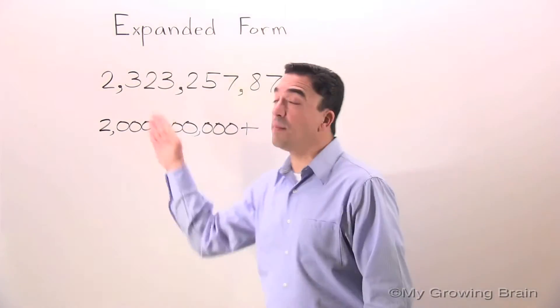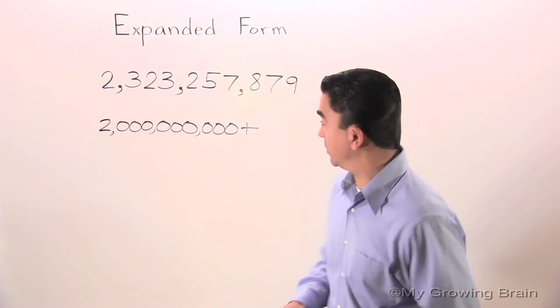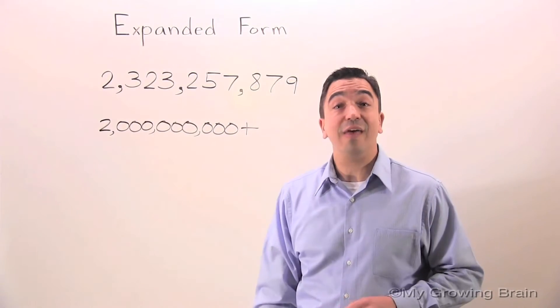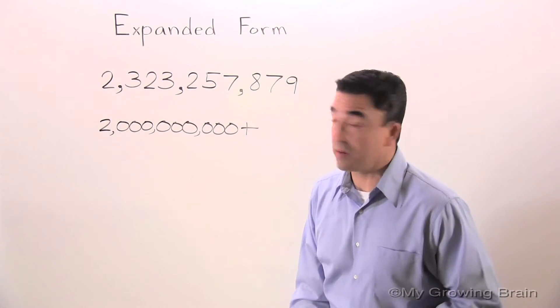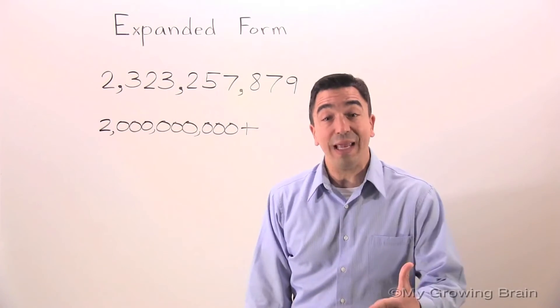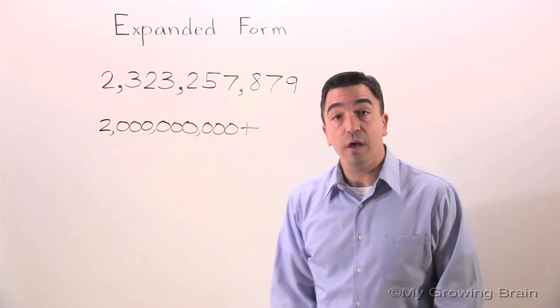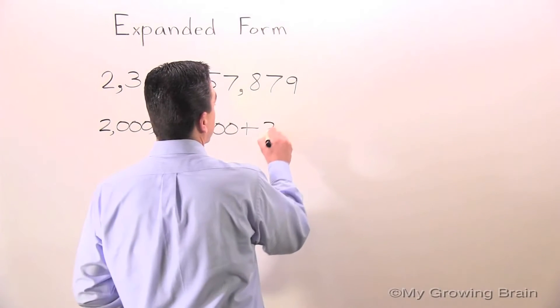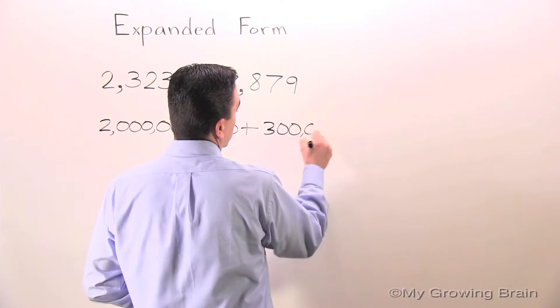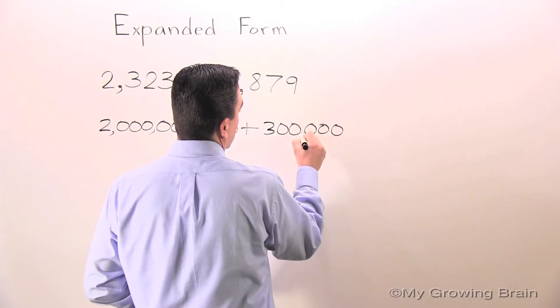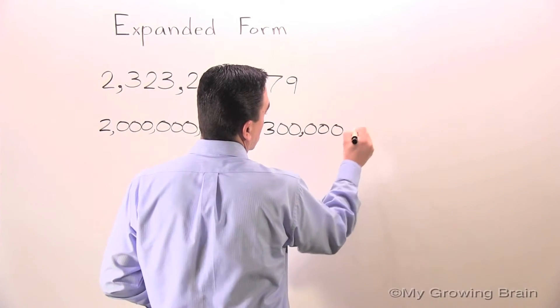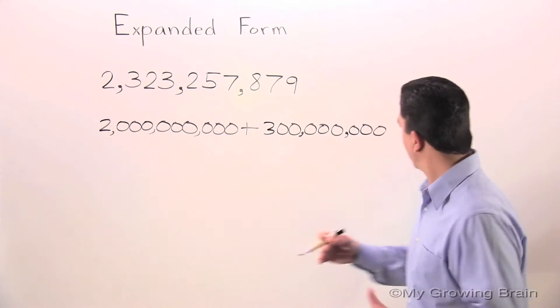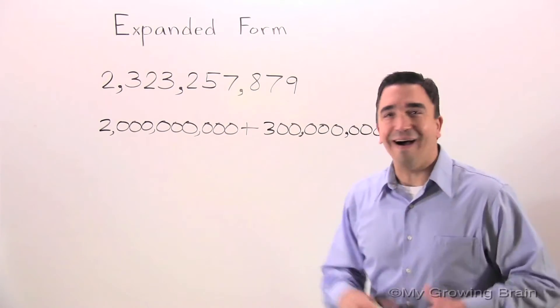Now we're gonna move into the millions period. We're gonna work right here. This is the hundred millions place. The digit is 3. It has a value of 300 million. Let's write it! All right!